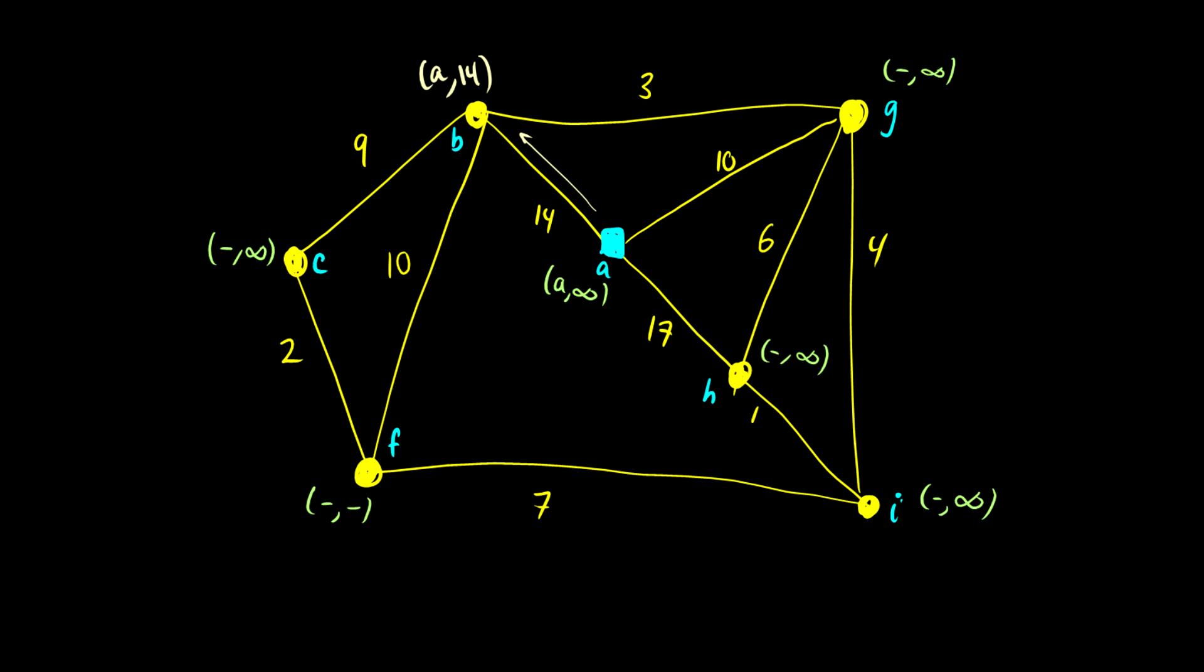What about G? Well, G also comes from A, and has a distance of 10. What about H? H comes from A, and has a distance of 17. So those are all the vertices that A can go to from here. We only look at those ones.